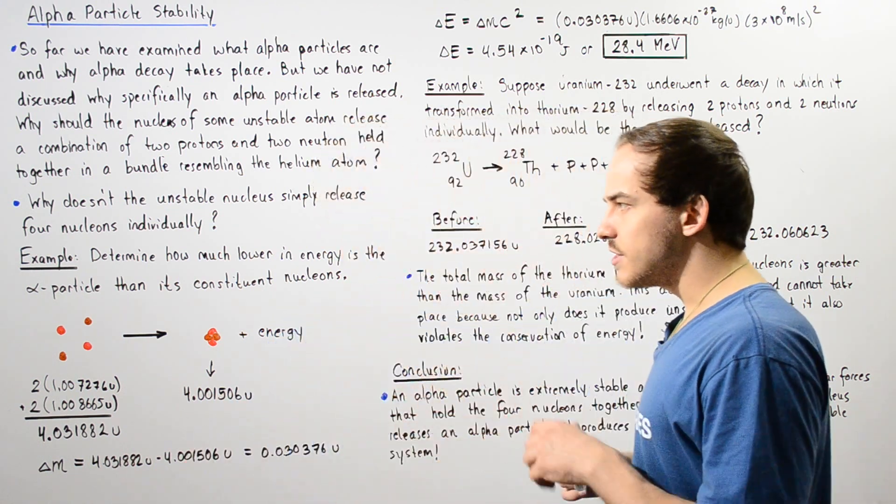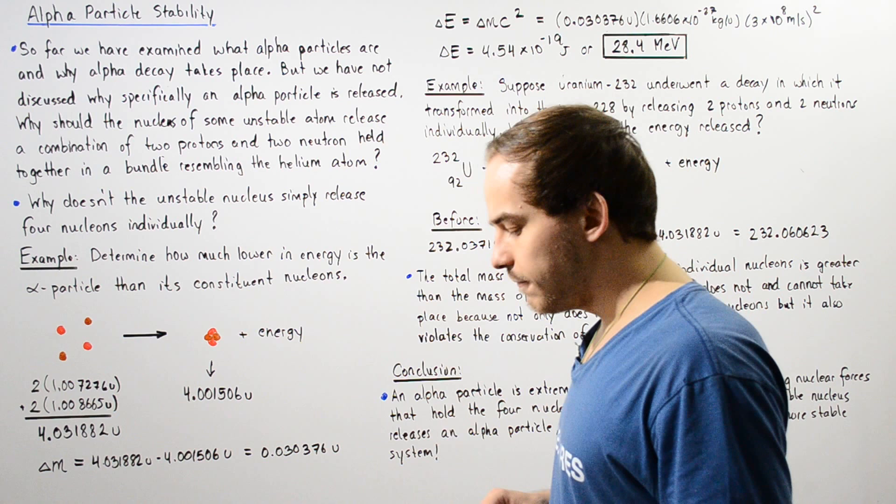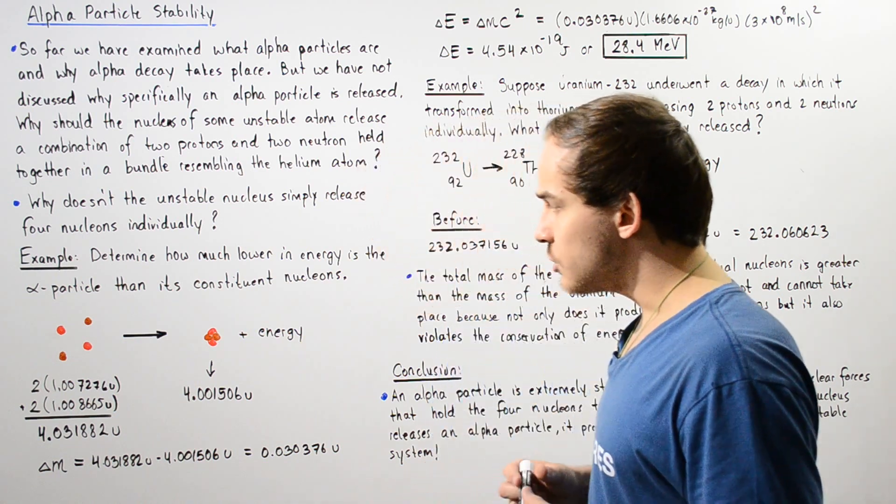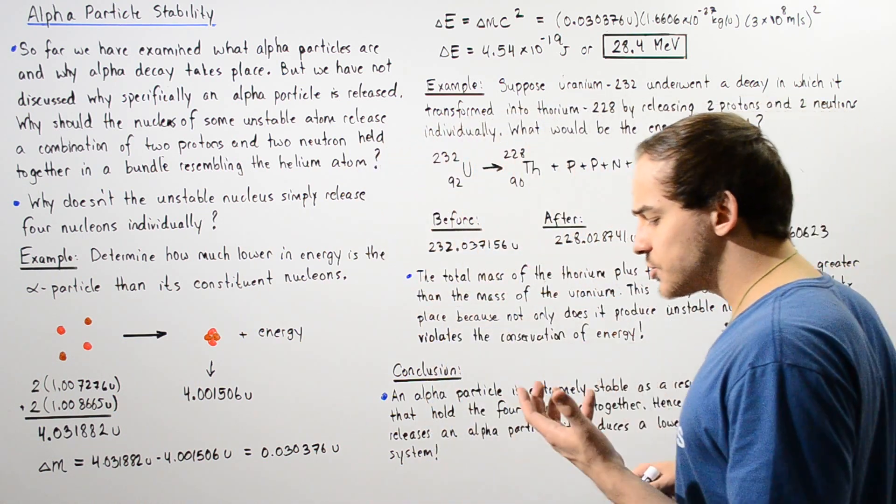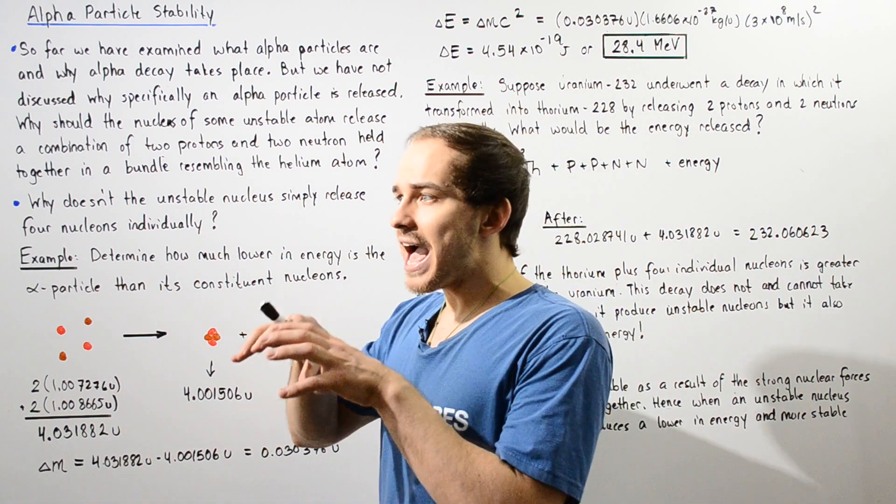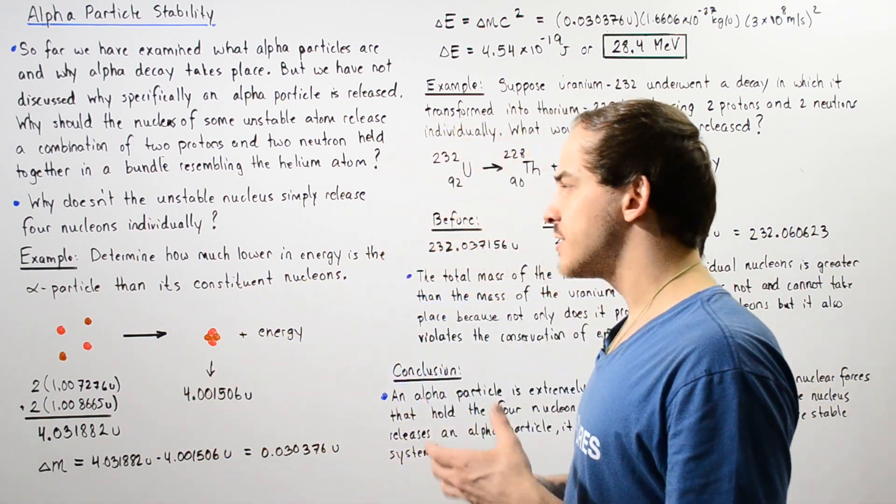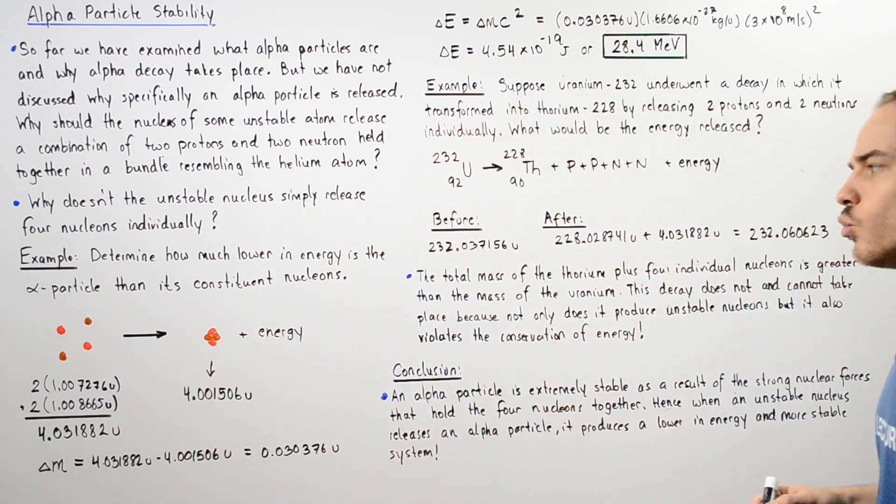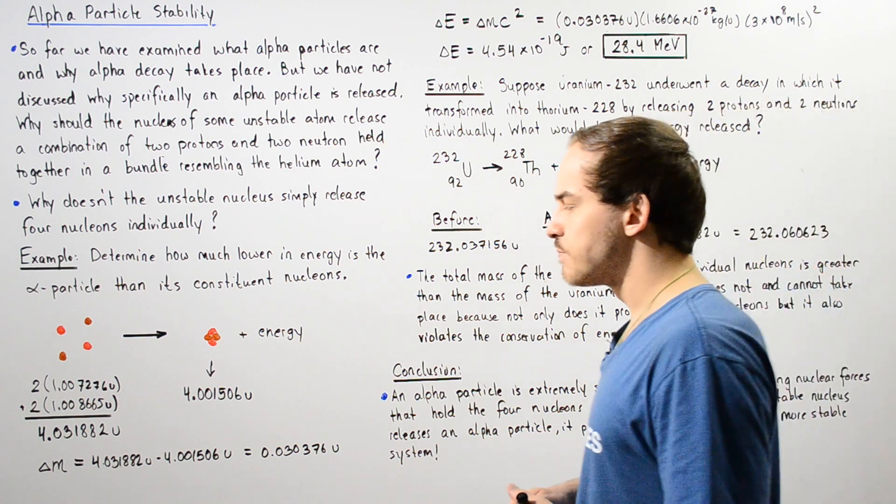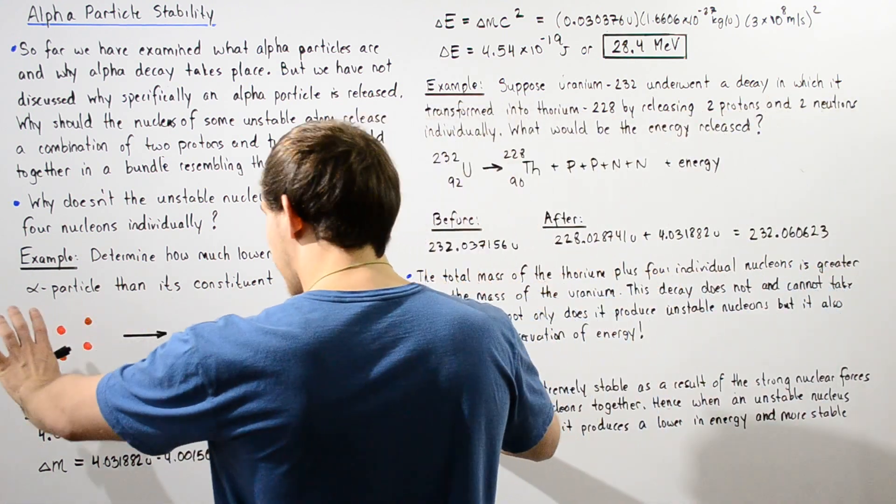So to answer this question, let's look at the following example. So determine how much lower in energy the alpha particle bundle is than its constituent four nucleons. So let's examine the following reaction.